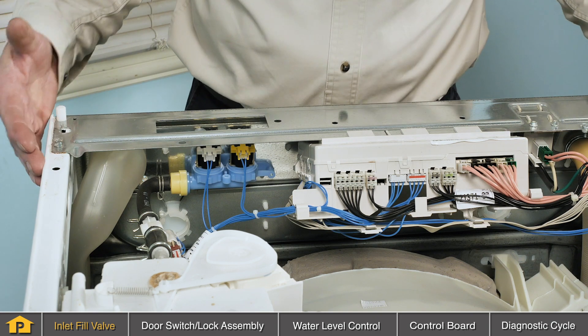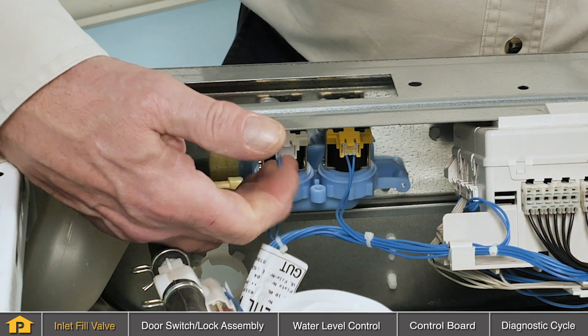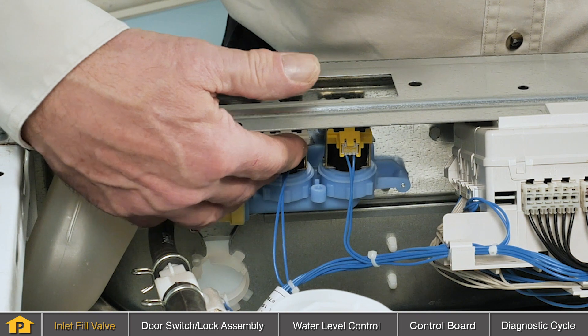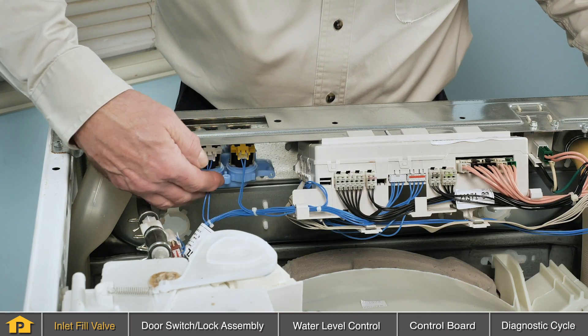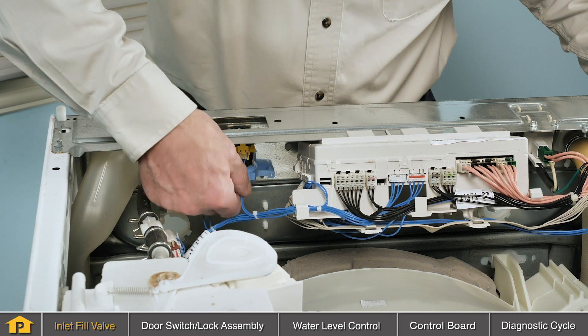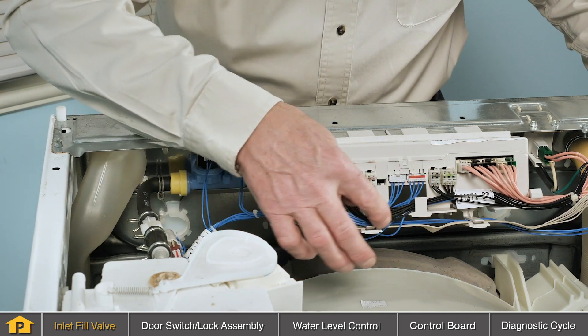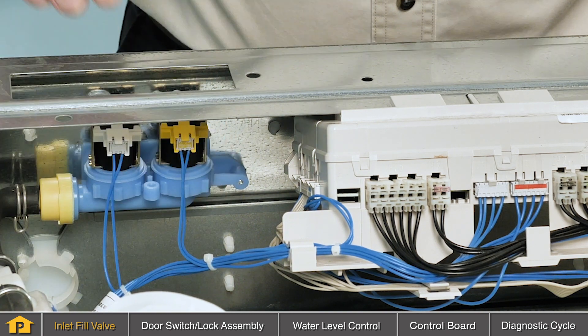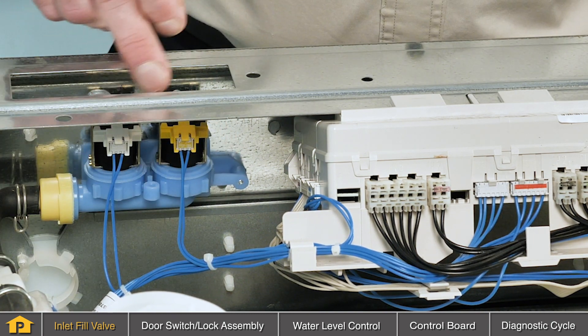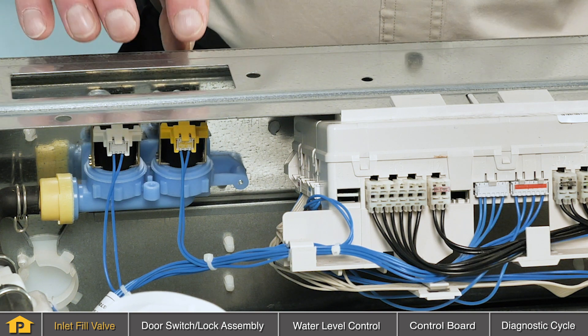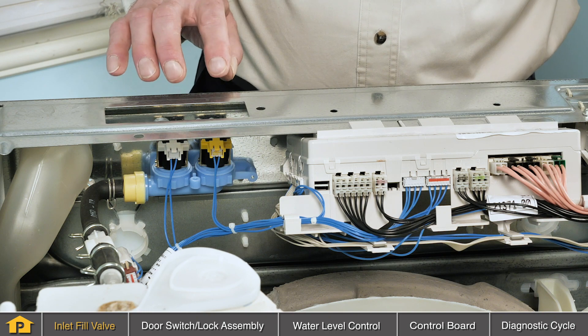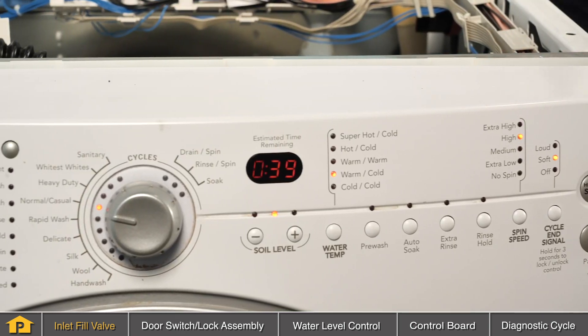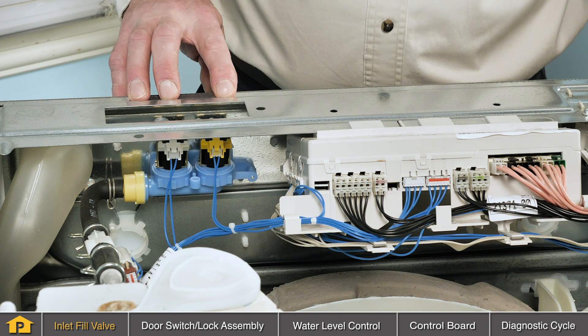We've removed the cover on this particular front load washer to point out that the wire harnesses that are connected to that inlet fill valve, there's always a possibility that you have a loose or bad connection to that solenoid. Verify that the connections are tight, there are no broken wires and that the harness connects properly to the control board. If we verify that the connections are secure, the next step will be to test for live voltage going to those solenoids during the fill portion of the cycle. That procedure should only be performed by somebody that is comfortable using a volt meter in a live voltage circuit. If you're not comfortable doing that, you should contact a qualified technician and have them perform that test.